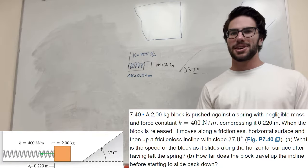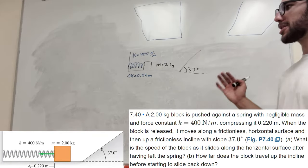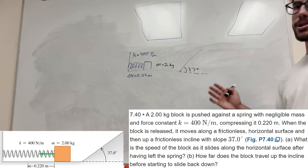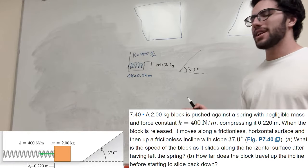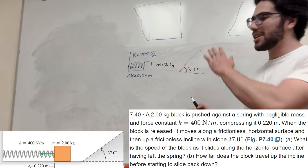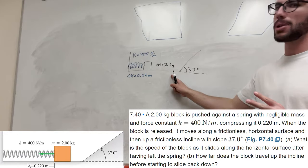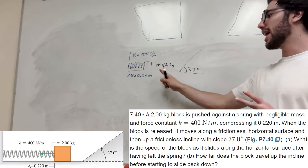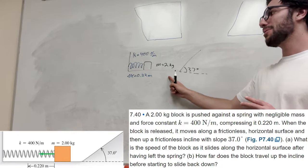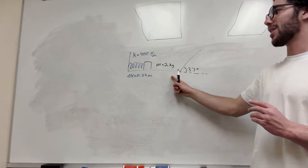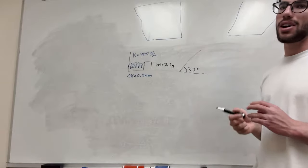What's up Cal gang? Alright, so we're here with this problem. We have this block that we're pushing against the spring, and what we're gonna do is let go of that block — it's gonna pick up speed and then go up this hill. We have two parts of this problem: first we're gonna find how fast the block is going after it leaves the spring, and then we want to find how far up the ramp the block goes.